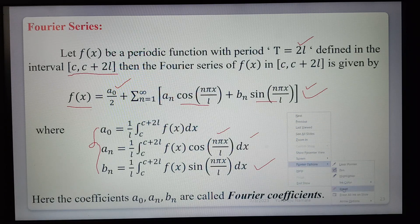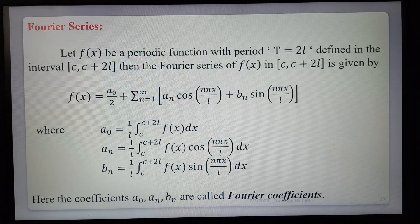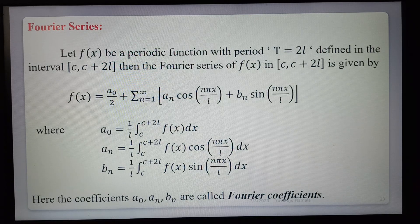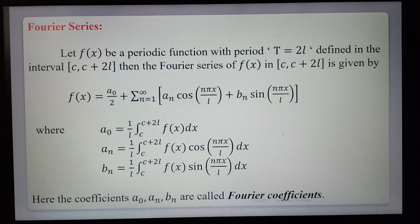Fourier series can be obtained in four different forms depending on the interval. The four intervals are: (0, 2l), (−l, l), (0, 2π), and (−π, π). In the general Fourier series formula, for the first interval substitute c = 0; for the second substitute c = −l; for the third substitute c = 0 and l = π; for the fourth substitute c = −π and l = π.